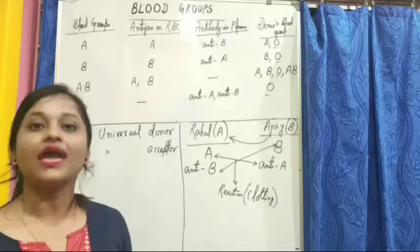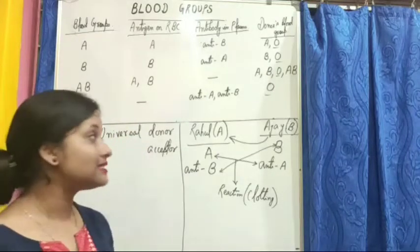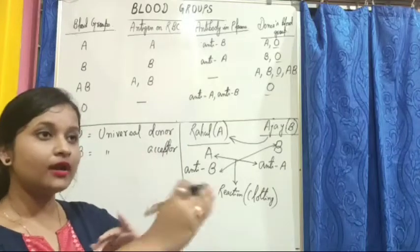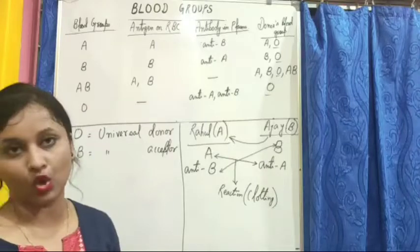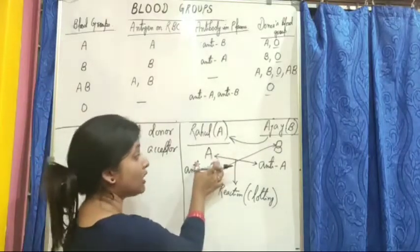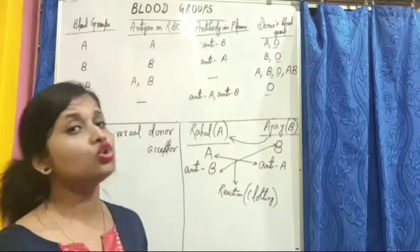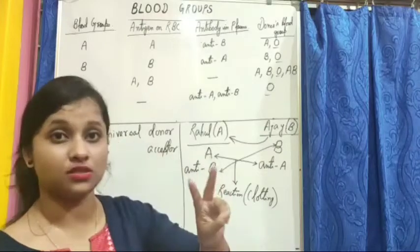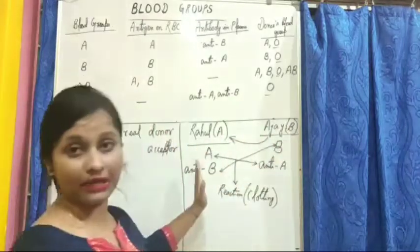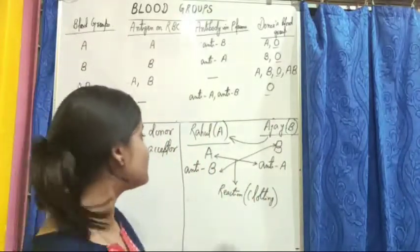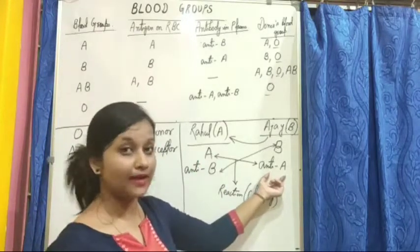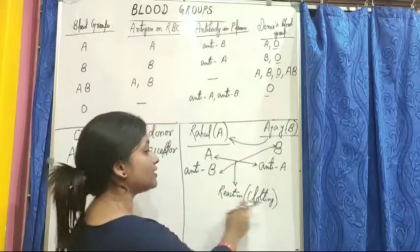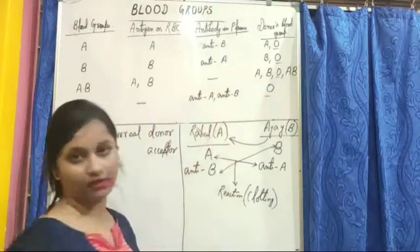This reaction leads to clotting of blood in Rahul. As a result, it leads to the death of Rahul. This is why blood is not transferred between persons having different blood groups — the mismatched antigens and antibodies react, causing agglutination and death.